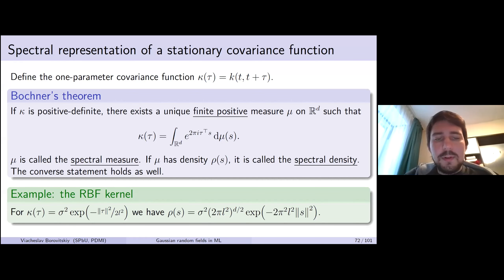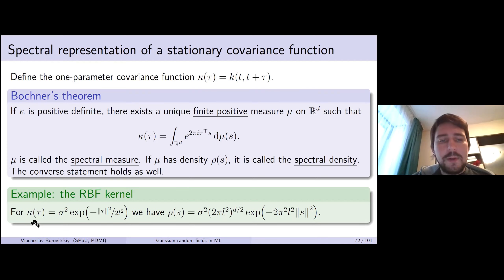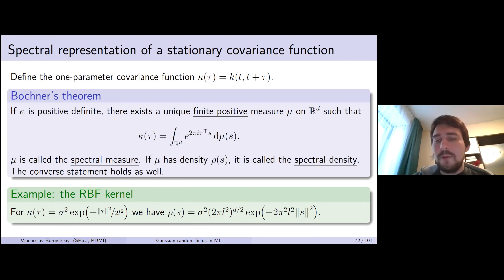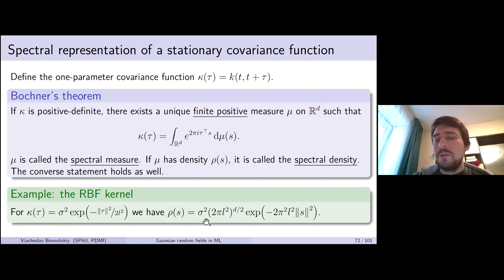One example where we can easily compute the spectral measure is the RBF kernel. The function κ(τ) for this kernel is a Gaussian function, and since the Fourier transform has a Gaussian function as its fixed point, the spectral density is again a Gaussian function — with different parameters associated to the original kernel parameters, but still of the same functional form.